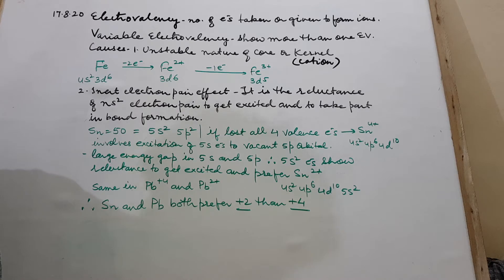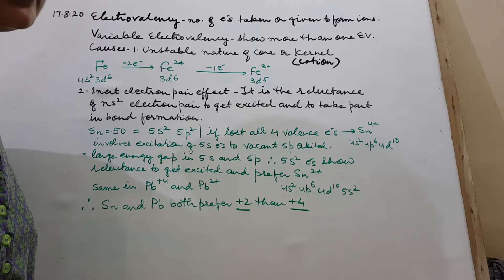Then we will study variable electrovalency. There are certain elements, various elements which show more than one electrovalency. Sometimes two, sometimes three, like ferrous-ferric, cupric, likewise. So this is called variable electrovalency.